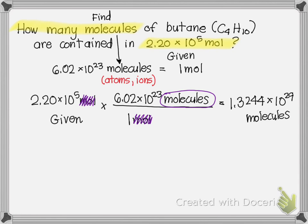And since I'm given three significant figures here, I'm going to round to 3. So, it's 1.32. I'm going to drop off this 4 so the 2 will stay the same. So, 1.32 × 10²⁹.